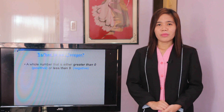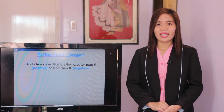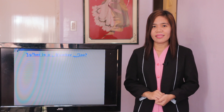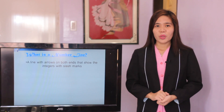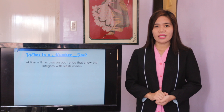What is an integer? It is a whole number that is either greater than or less than zero. It can be visualized on a number line. Next, what is a number line? It is a line with arrows on both ends that show the integers with slash marks and goes to infinity in both directions, positive and negative.